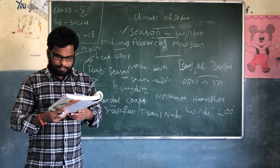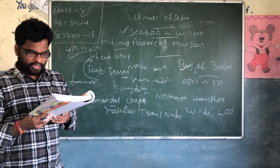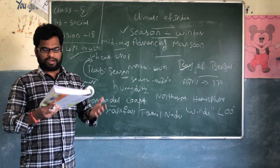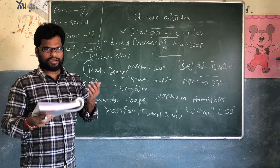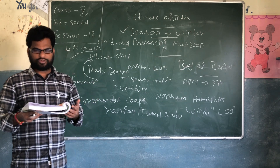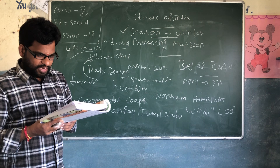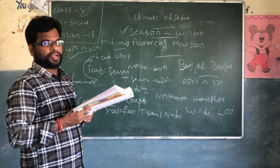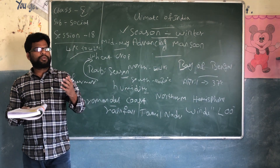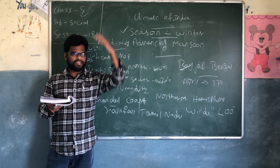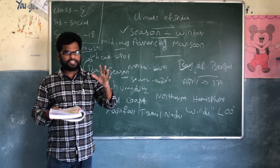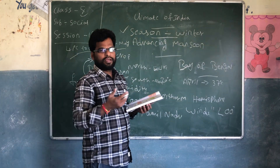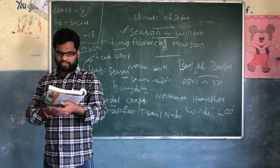Towards the end of the summer season, pre-monsoon showers are common. This helps in the earlier ripening of mangoes and other plantation crops in Peninsular India. You can see mangoes on trees — that is the season for mangoes — and plantation of crops and agriculture.